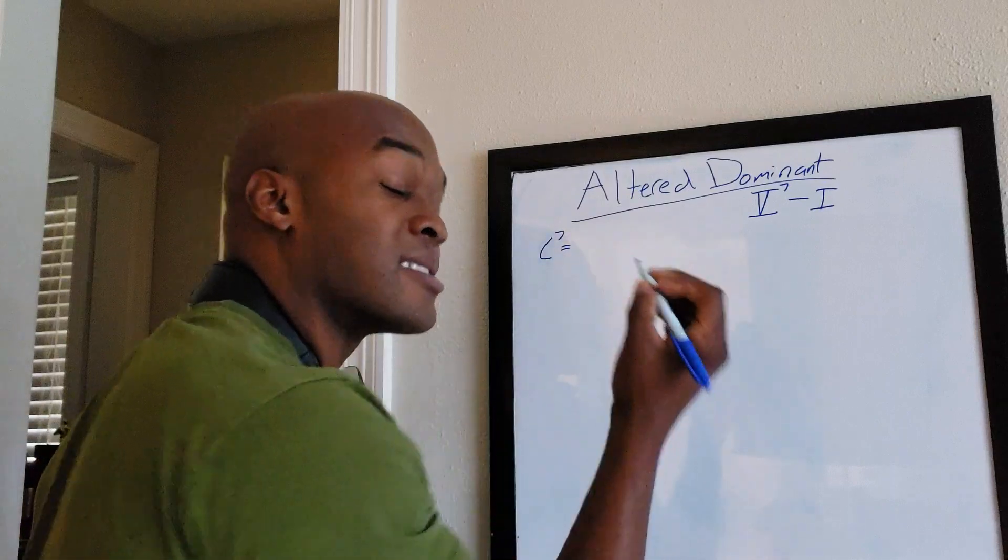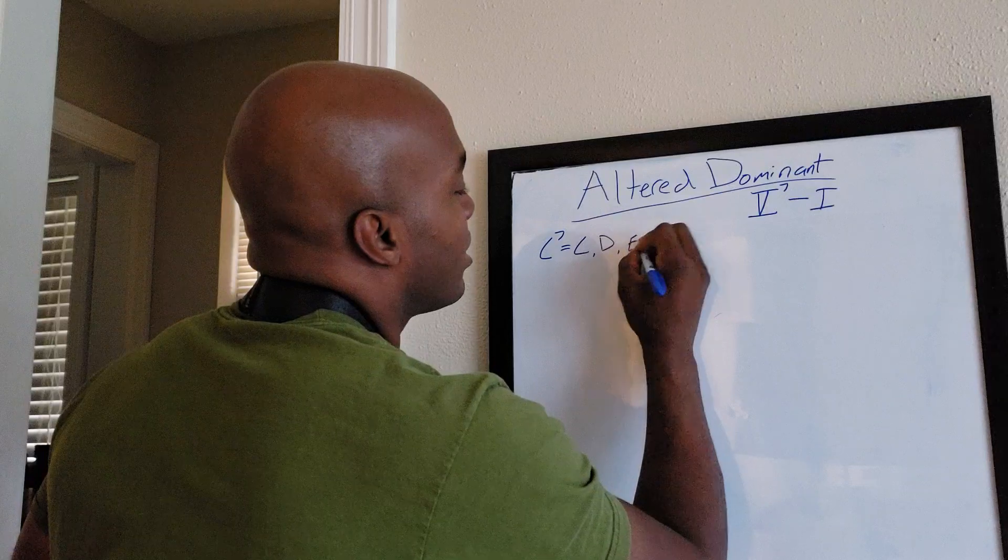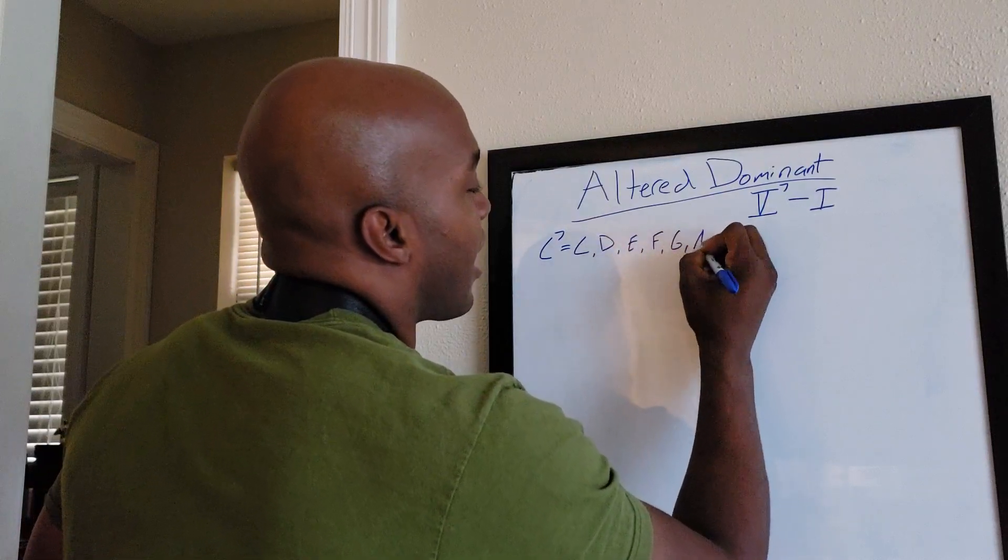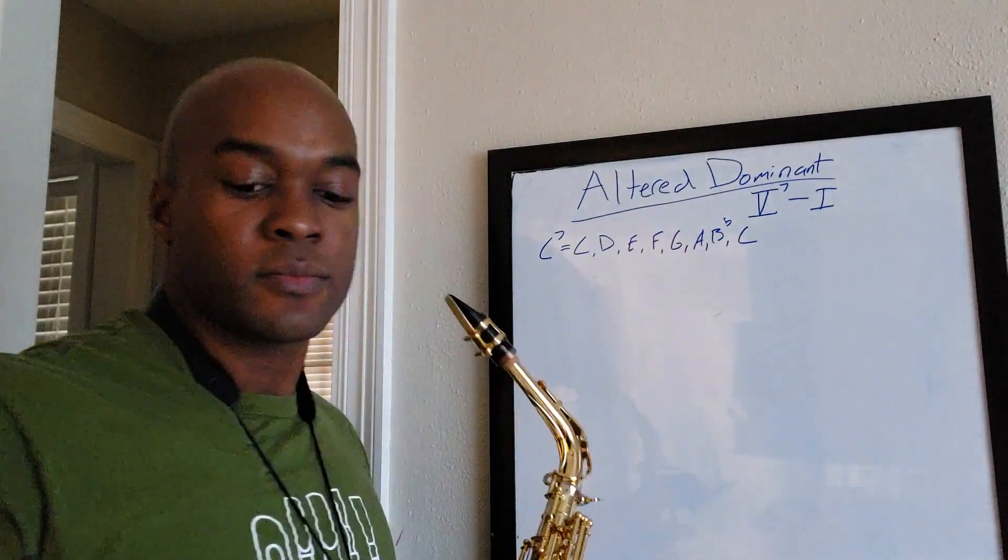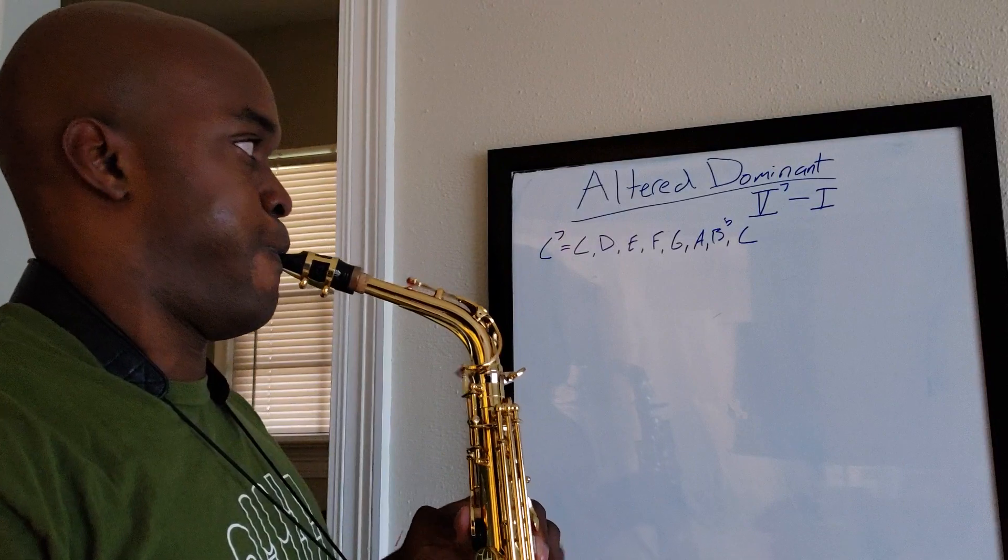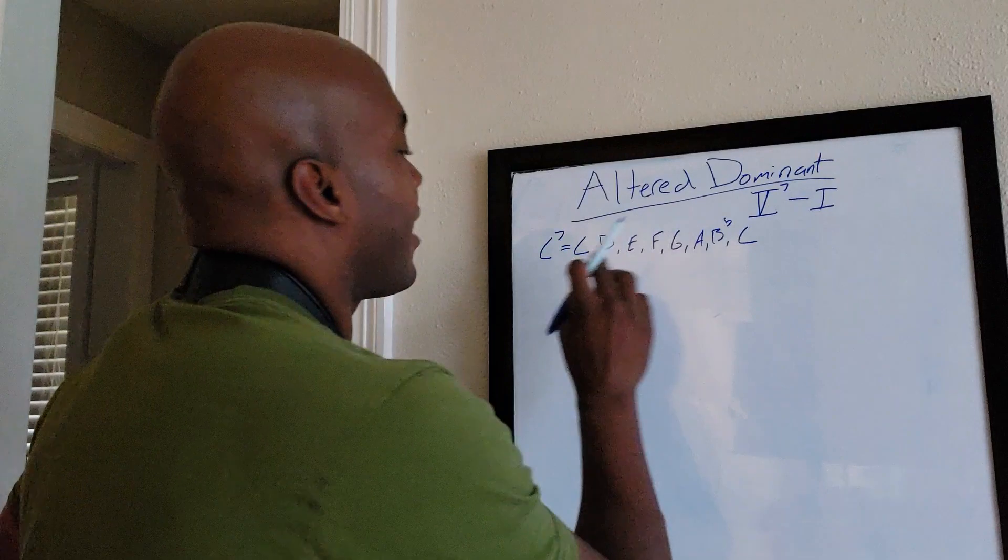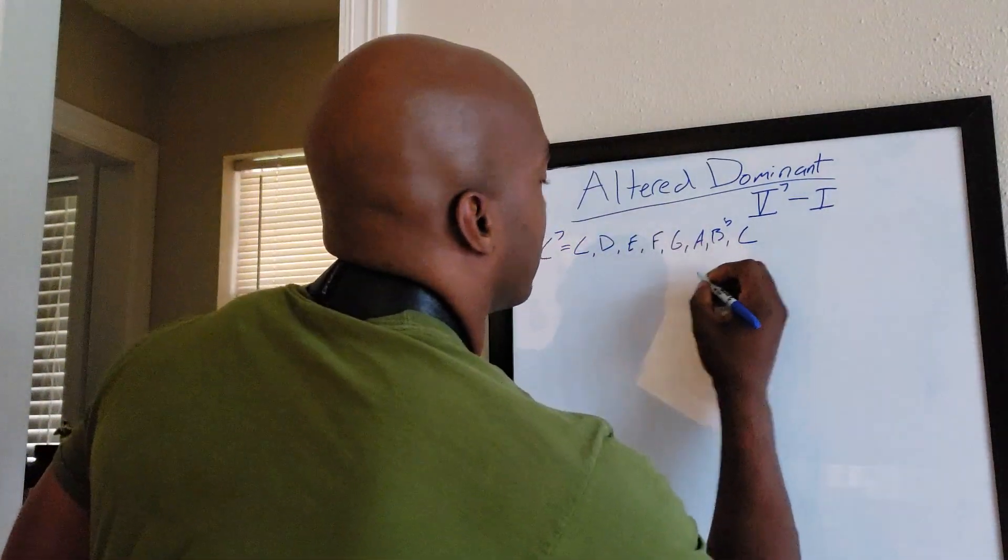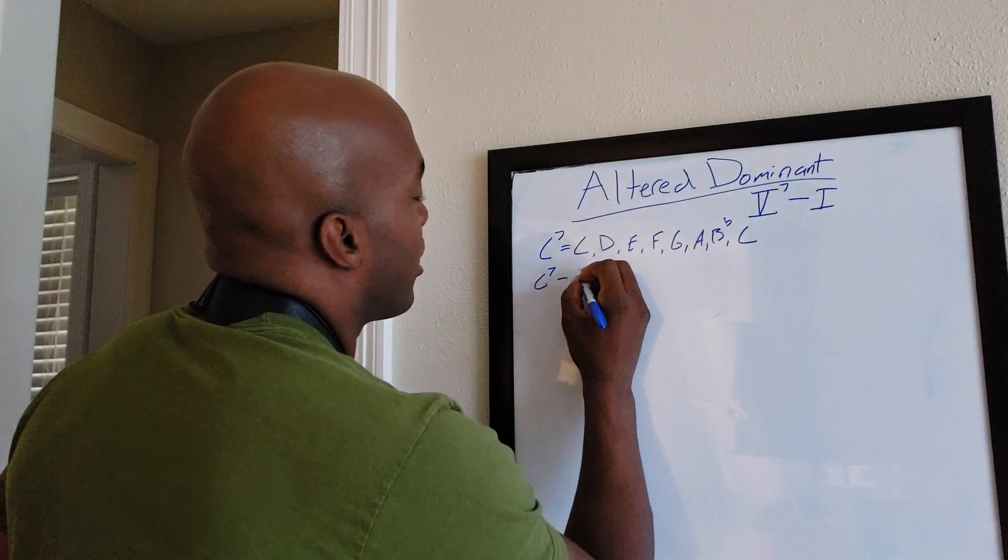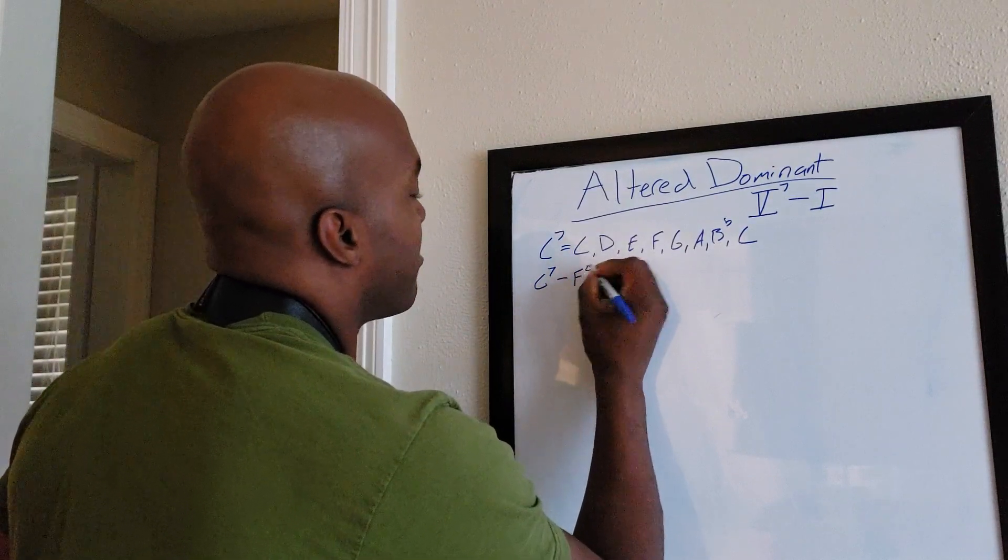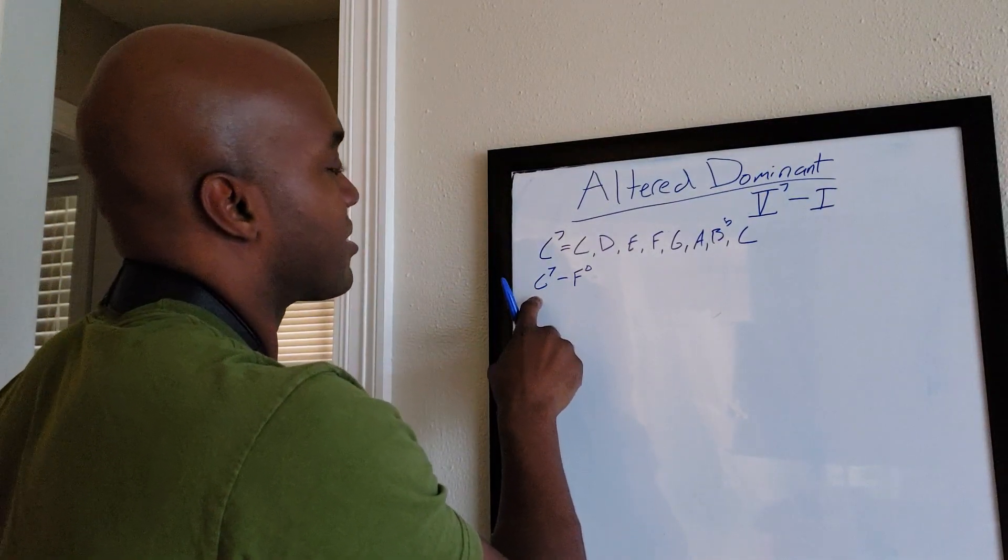In the key of C, if you see C7 and play the scale that corresponds with that, most people would say that is the C mixolydian scale, which is C D E F G A B flat and then C. So we have C7 that is going to go to an F major.